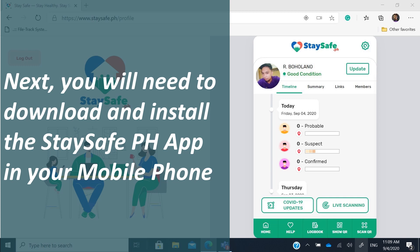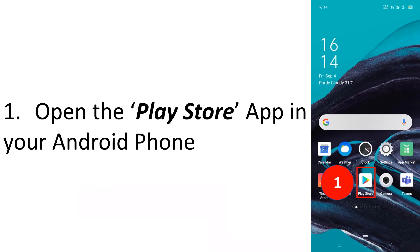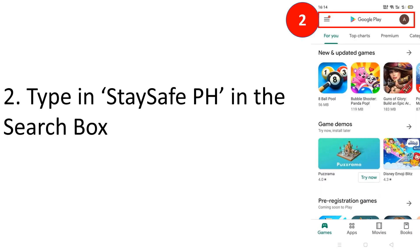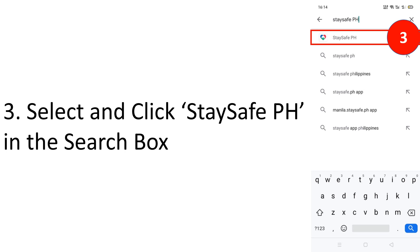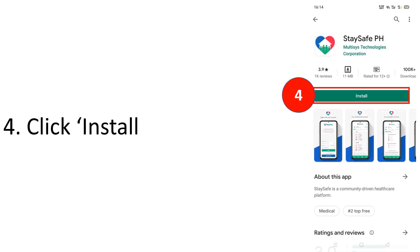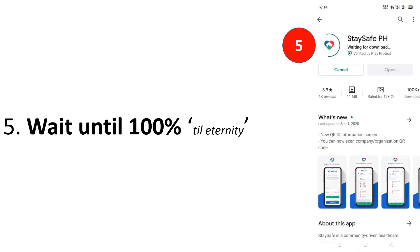As a bonus tip, here is how to install the StaySafe PH app on your mobile phone, especially for Android. Go to the Play Store app on your Android phone and type 'StaySafe PH' in the search box. It will auto-suggest — select and click StaySafe PH, then click install.